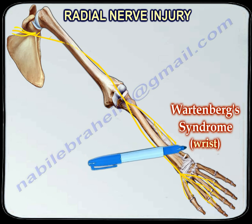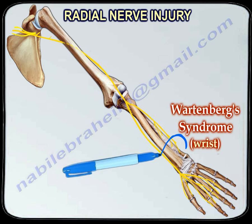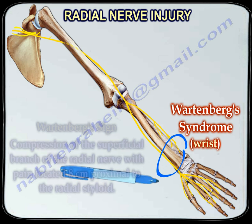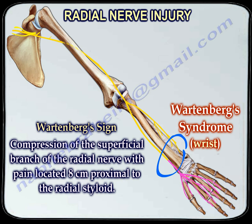Radial nerve injury may also occur with Wartenberg syndrome at the wrist. Wartenberg syndrome is compression of the superficial branch of the radial nerve, with pain located eight centimeters proximal to the radial styloid.